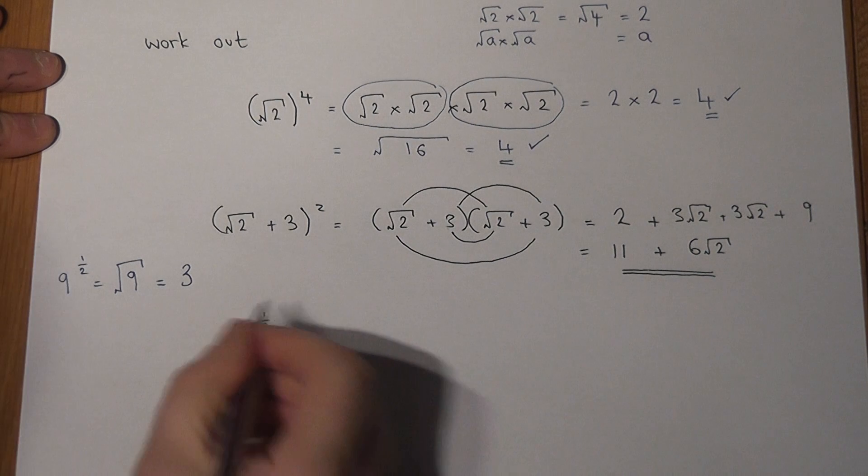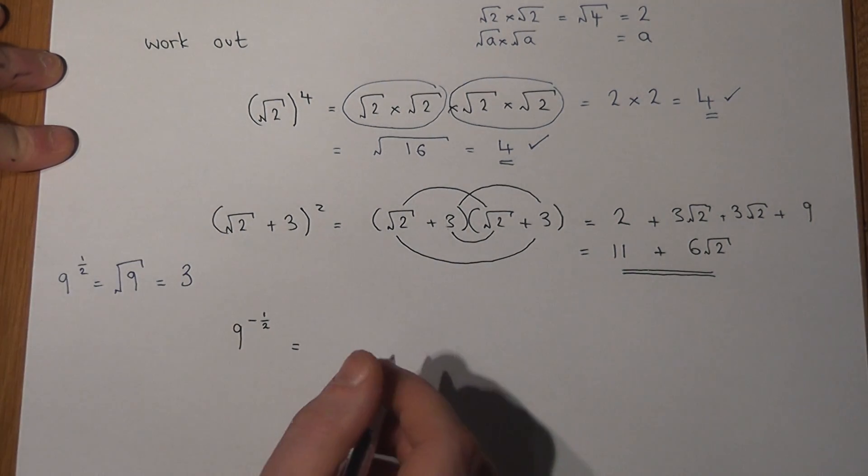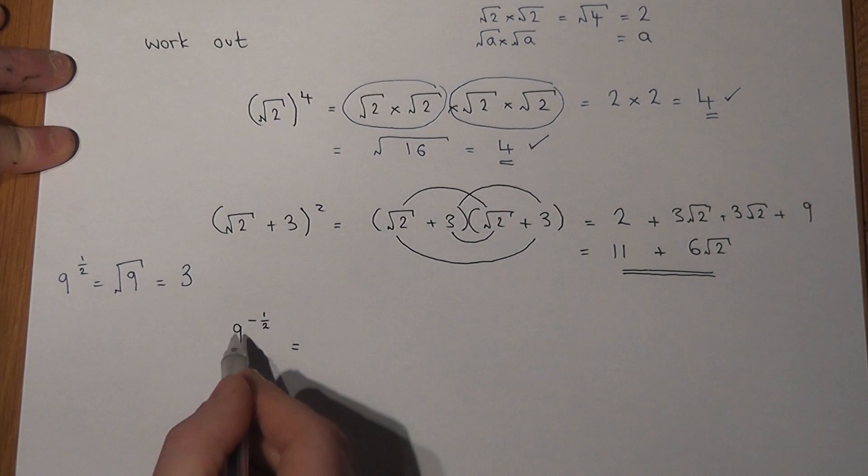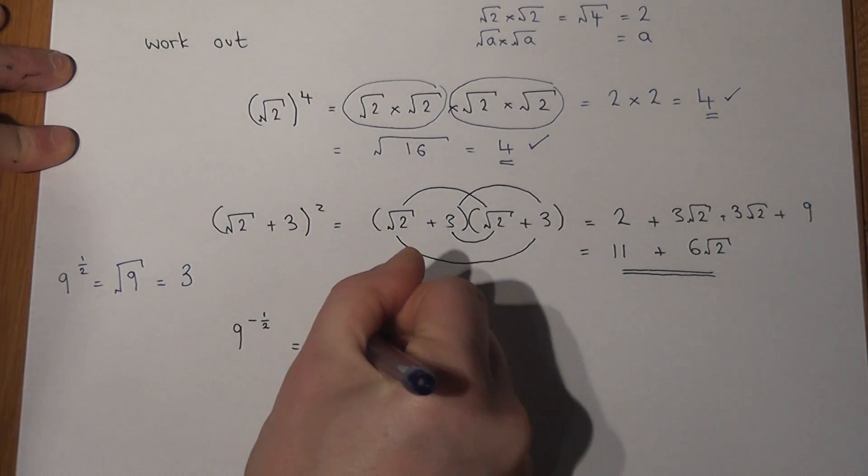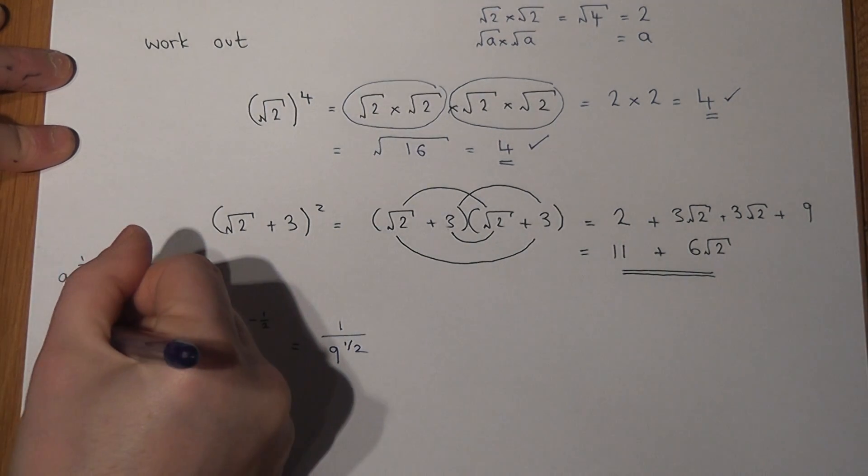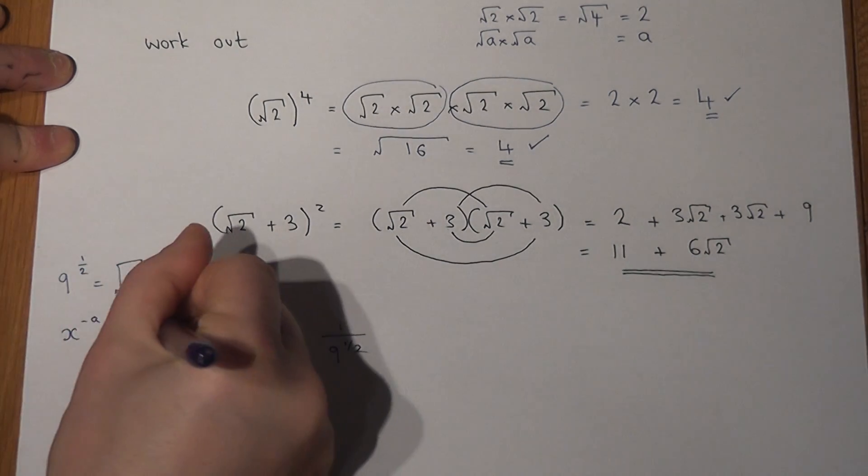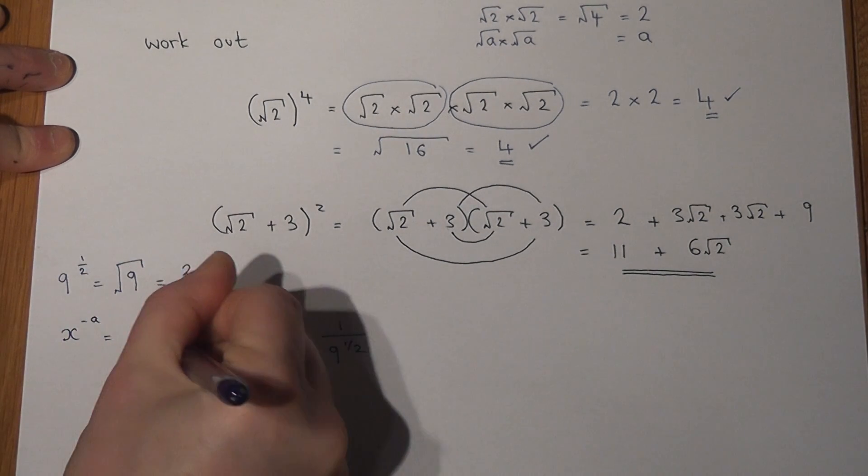However, the negative power also means something really important. And the negative power means reciprocate, which means 1 over. So this question means 1 over 9 to the power of a half. More generally, x to the power of minus a is 1 over x to the power of a.